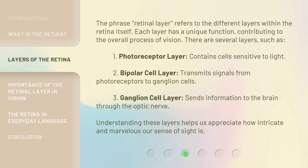1. Photoreceptor layer — contains cells sensitive to light. 2. Bipolar cell layer — transmits signals from photoreceptors to ganglion cells. 3. Ganglion cell layer — sends information to the brain through the optic nerve.